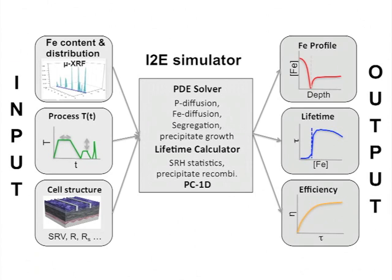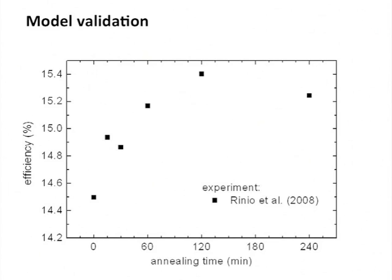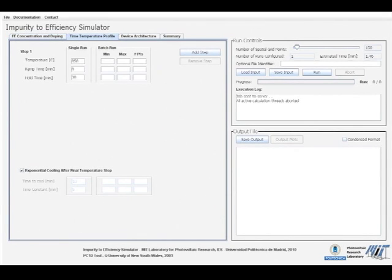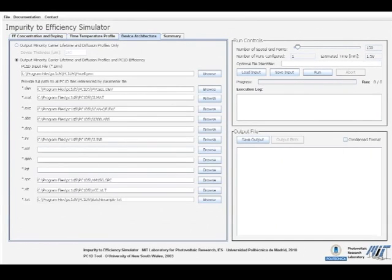I2E helps us identify the optimal way to process our solar cells. Predictions from the I2E model have been validated by comparison to experimental data. The inputs to I2E are the initial iron concentration and distribution, the time-temperature profile you want to test, and the architecture of your solar cell.